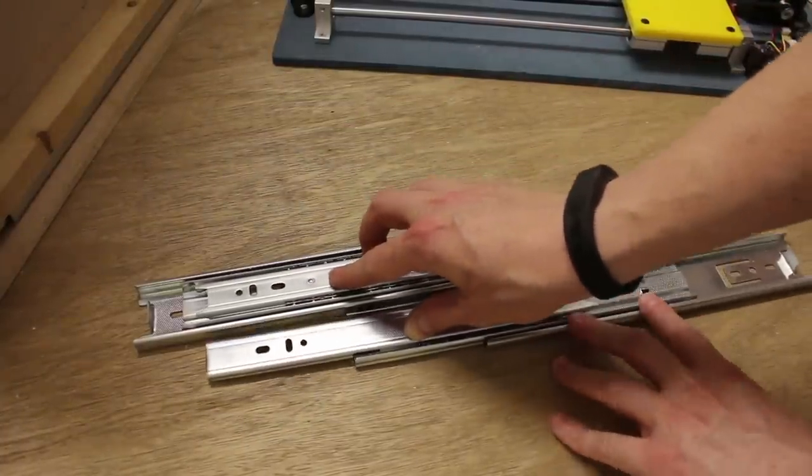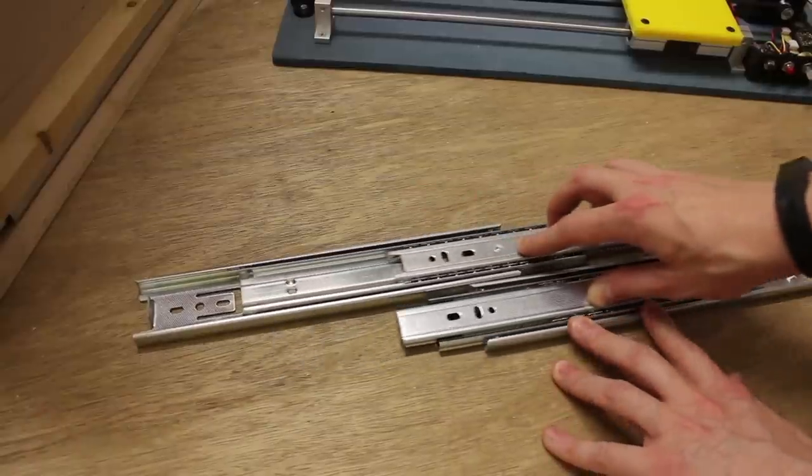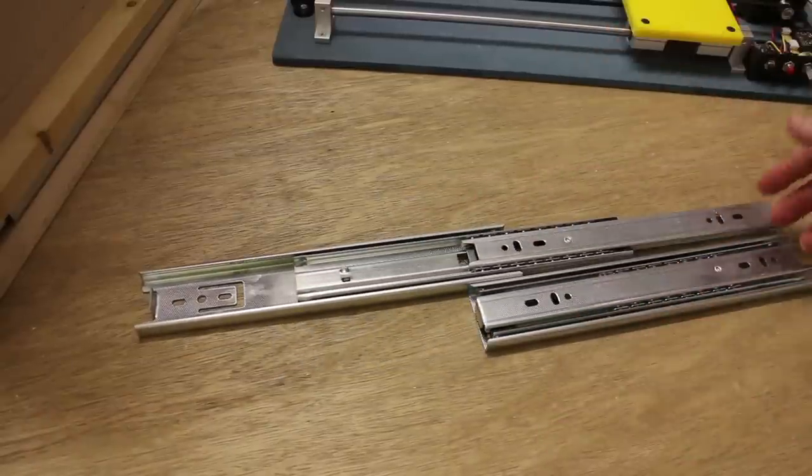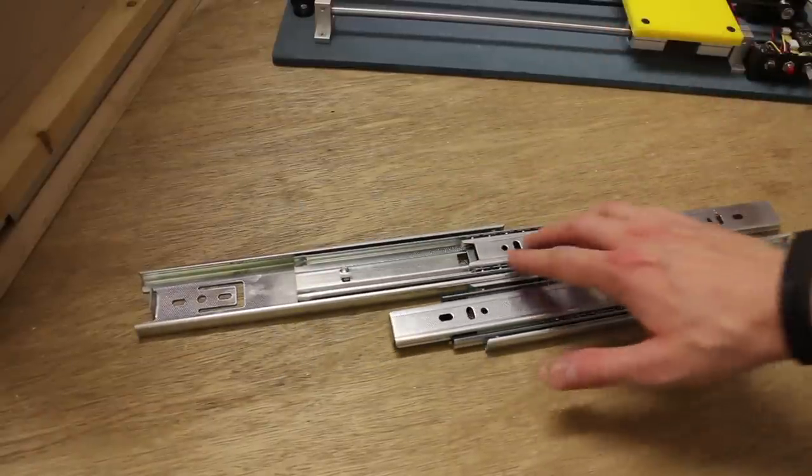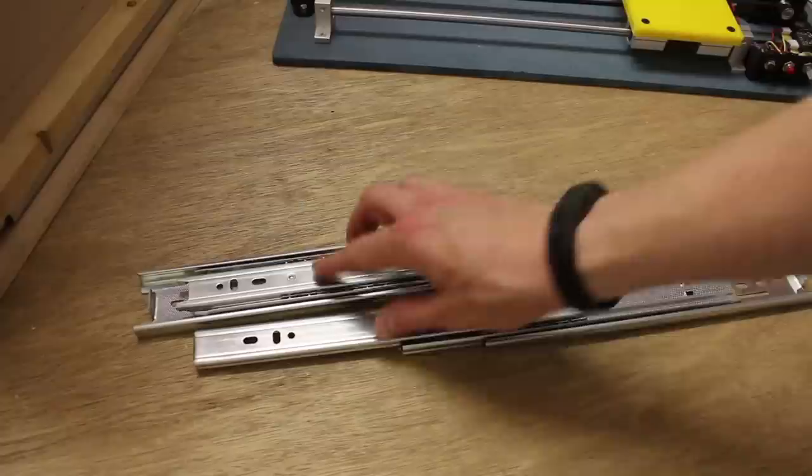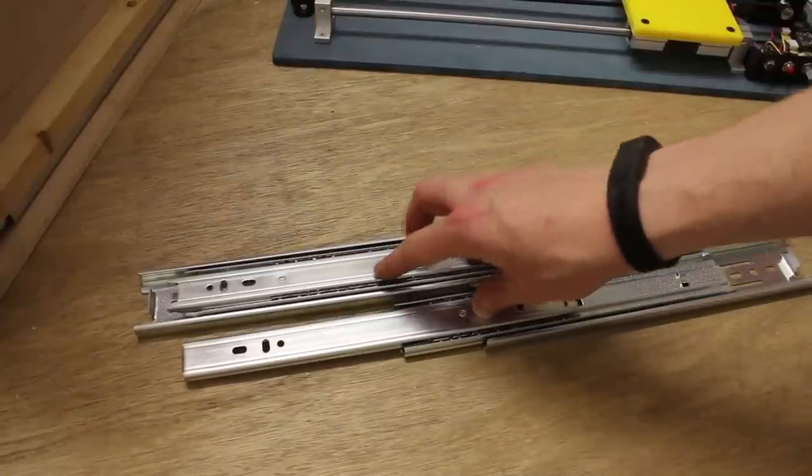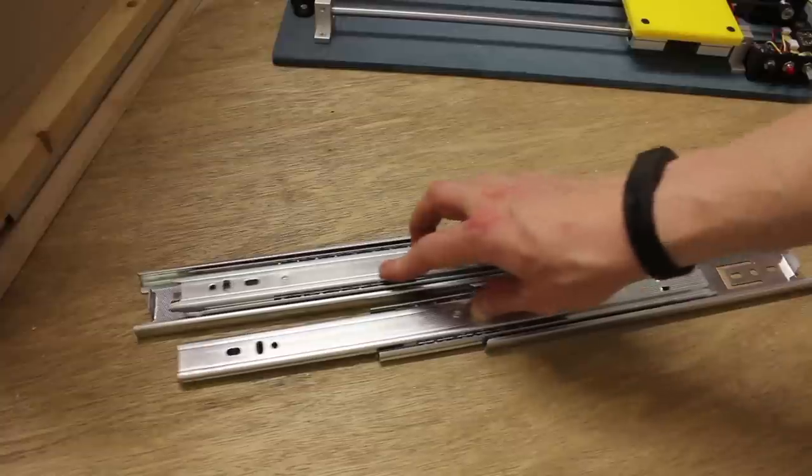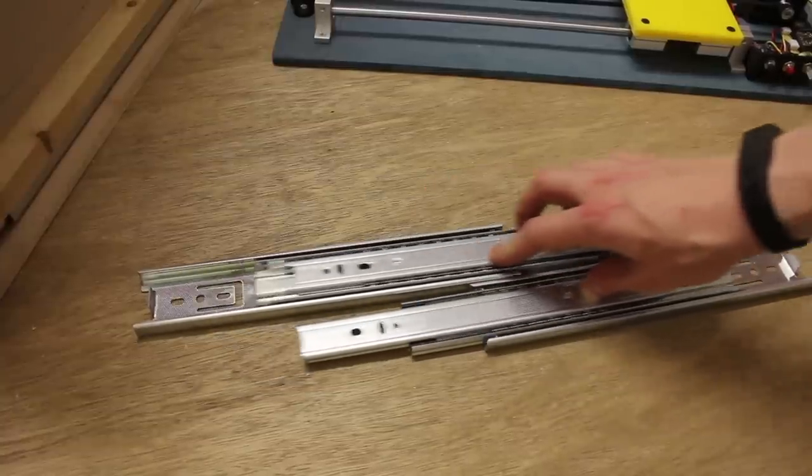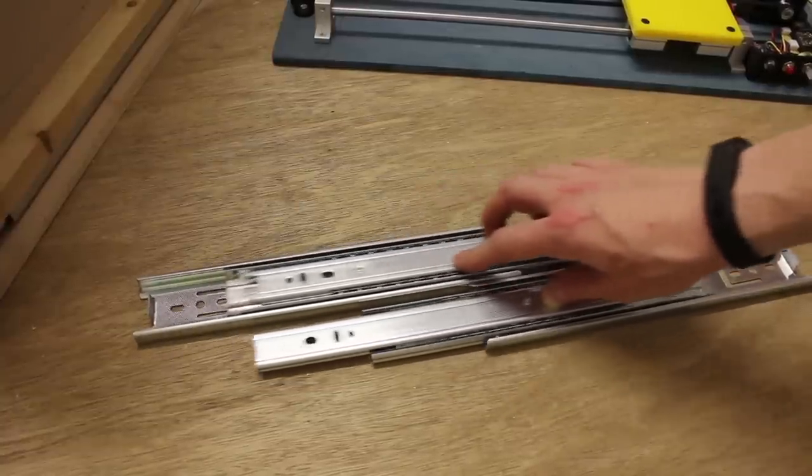That way things move together and even as one starts to overhang, it's fully supported by the other one. And it should be a pretty simple way of getting a much more stable motion than you would get with just one drawer slide.